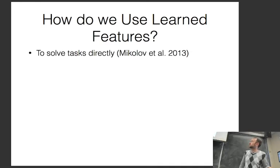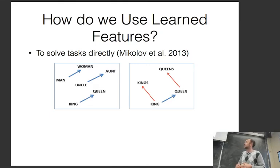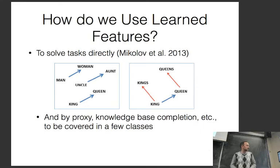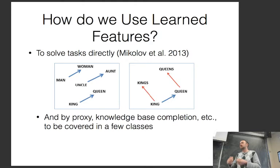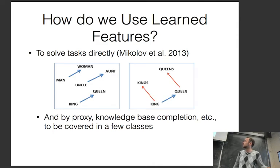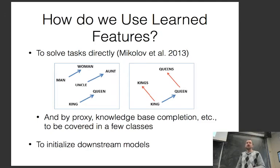These embeddings can be used to solve tasks directly — for example the king/queen analogy — and by proxy for knowledge base completion. Interestingly, methods like Mikolov et al. are a simple version of inducing discrete structure: from the embedding space they induce links between words, telling you that man/woman, uncle/aunt, and king/queen are related in the same way. Another common use is to initialize downstream models.